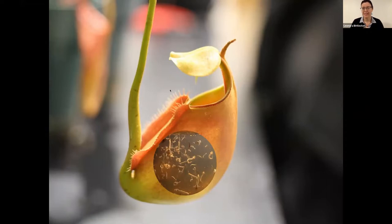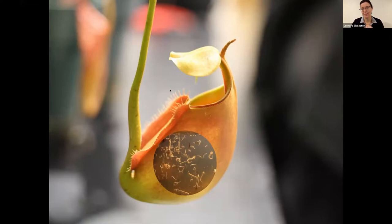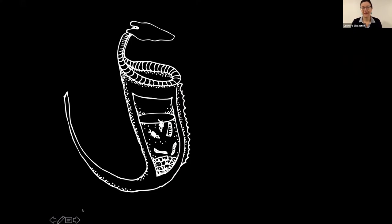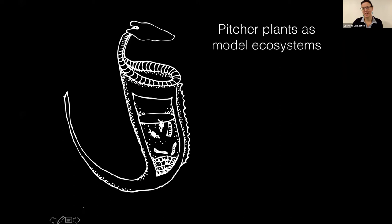In this system there are predators and prey, decomposers, and primary producers — a whole dynamic ecosystem going on, but on a smaller scale. There are many different reasons why these make great model ecosystems.